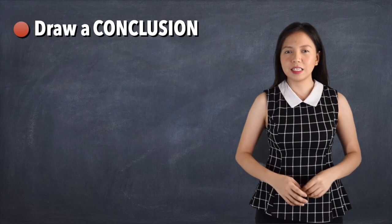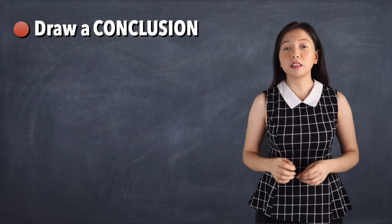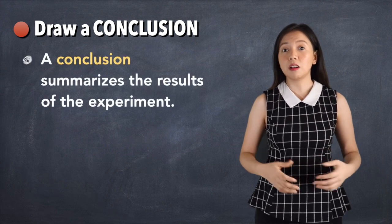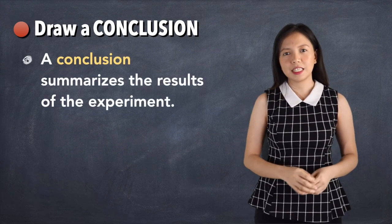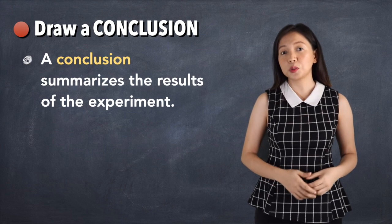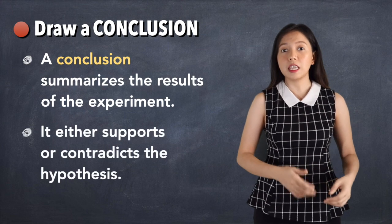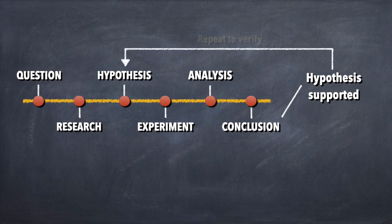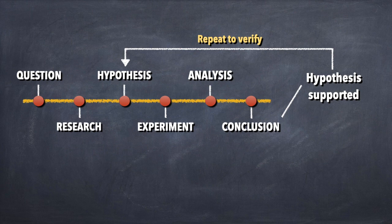And now the sixth step which is to draw a conclusion. A conclusion summarizes the results of an experiment. It is stated in a way that either supports or contradicts the hypothesis. If the results support the hypothesis, repeat the experiment to verify. If enough evidence accumulates to support a hypothesis, it becomes a theory. A theory is formed after repeated experiments.